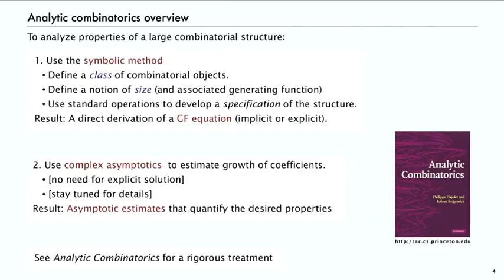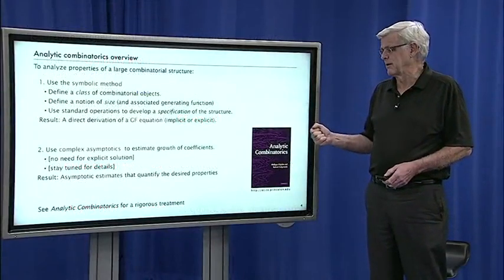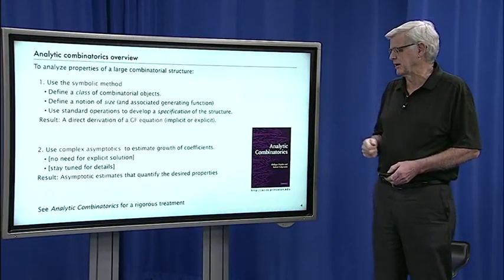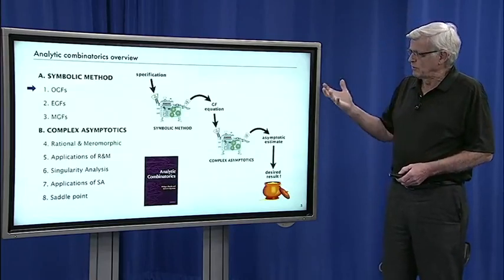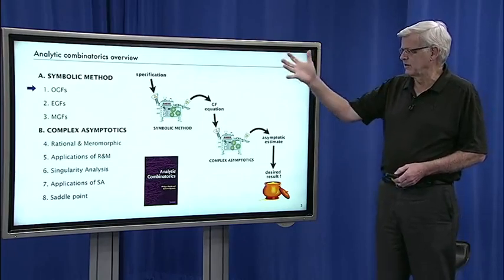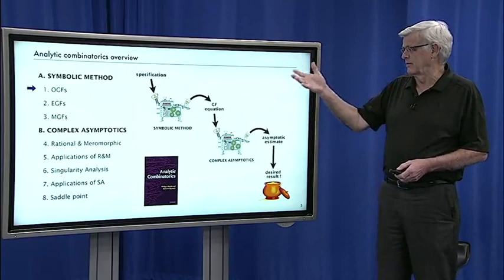That's what the analytic combinatorics book is all about. First part's about the symbolic method. Second part's about deriving directly asymptotic estimates of the coefficients. The overview is like this: these are the eight chapters that we're going to talk about. The symbolic method has three chapters: ordinary generating functions, exponential, and multivariate. Then some chapters on complex asymptotics analysis.